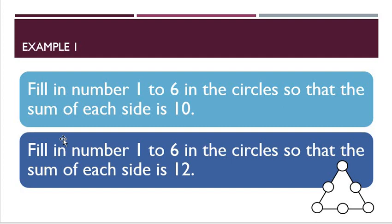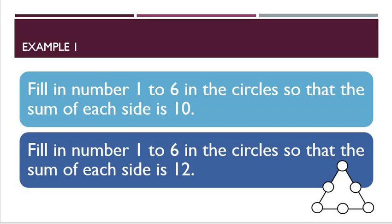Let's start with our first example. Fill in numbers 1 to 6 in the circles so that the sum of each side is 10. We'll also do it for the case where the sum of each side is 12. So this is the figure and we're going to put numbers 1, 2, 3, 4, 5, 6 in the circles — there are 6 circles — so that the sum on each of the three sides is 10, and we'll also do it for 12.